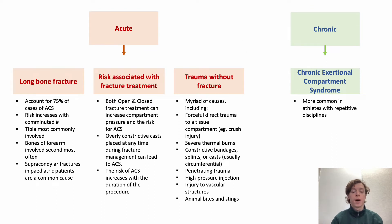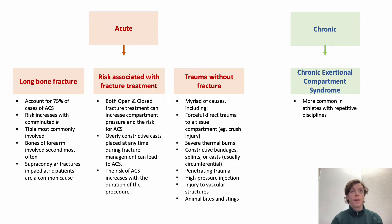There are two types of compartment syndrome; we won't be addressing chronic compartment syndrome today. Long bone fracture accounts for 75% of cases of ACS, and the risk increases with a comminuted fracture. The tibia is the most commonly involved bone, but bones of the forearm are also very common. In the paediatric population, supracondylar fractures are a common cause of ACS. Both open and closed fracture treatment can increase compartment pressure, and constrictive casts or any orthopaedic procedure of longer duration also confers a risk.